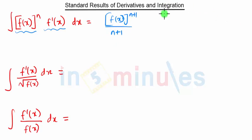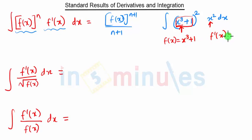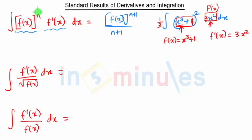For example, consider the integration of (x³+1)² · x² dx. Here we identify f(x) = x³+1, so f'(x) = 3x². Since the numerator has x² (not 3x²), we multiply and divide by 3 to match the f'(x) form. Now this matches [f(x)]^n · f'(x) with n = 2.